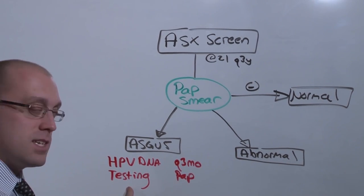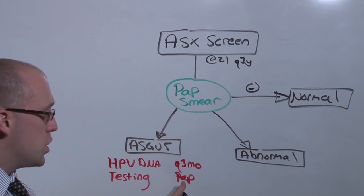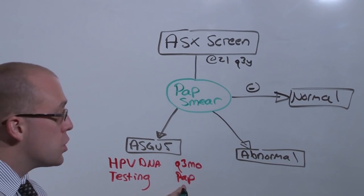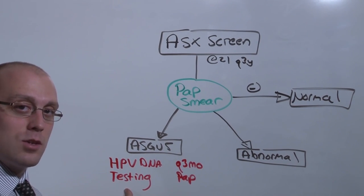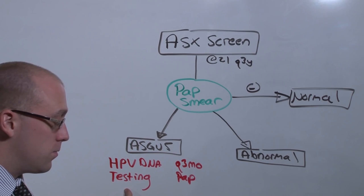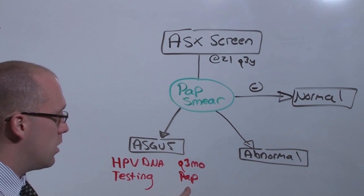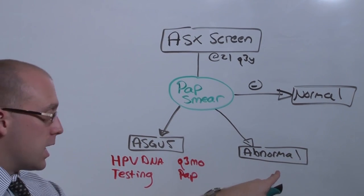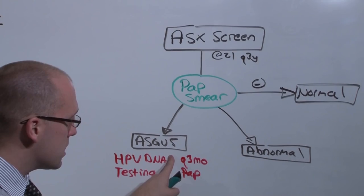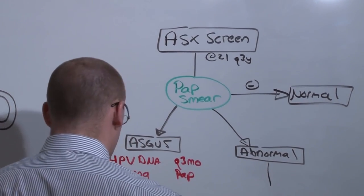Only if there is persistence of atypical cells on repeat paps does it become abnormal. If the HPV DNA testing shows a type that is not associated with cancer, or she clears two times in a row, she's considered normal. If there is HPV DNA testing of suspicious types or persistence of atypical cells, then it is abnormal.